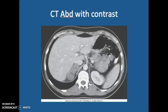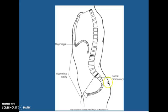This is a CT, an abdomen post-contrast. We have the liver here, here is your spleen, and this is your kidney. When we're looking at a sagittal view of the abdomen, you can see the thoracic cavity here separated by the diaphragm. You have your abdominal cavity here, and from the sacral prominence down to your pubic symphysis, this is your pelvic region.